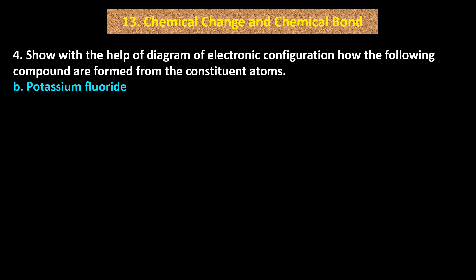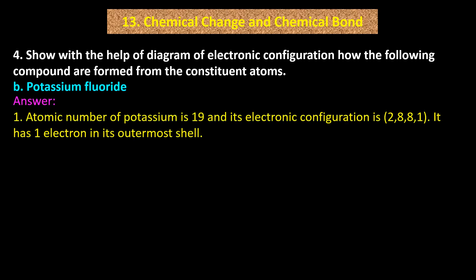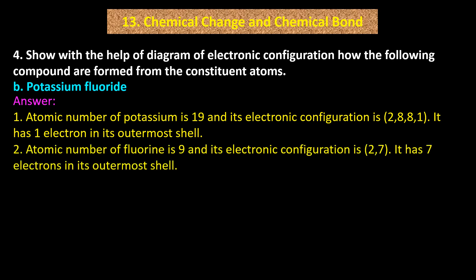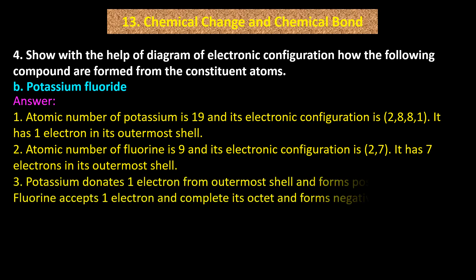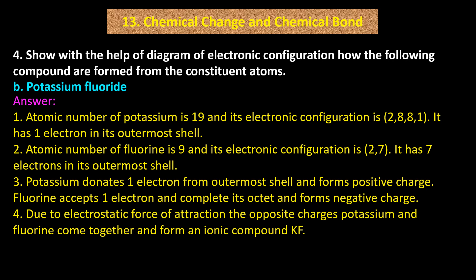B: Potassium Fluoride. Answer: Atomic number of potassium is 19 and its electronic configuration is 2, 8, 8, 1 — it has 1 electron in its outermost shell. Atomic number of fluorine is 9 and its electronic configuration is 2, 7 — it has 7 electrons in its outermost shell. Potassium donates 1 electron from its outermost shell and forms a positive charge. Fluorine accepts 1 electron, completes its octet, and forms a negative charge. Due to electrostatic force of attraction, potassium and fluorine come together to form ionic compound KF.